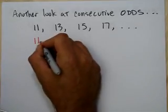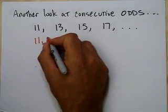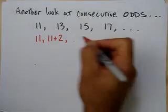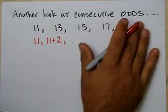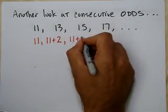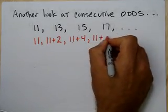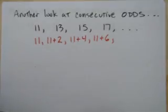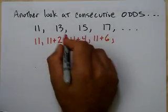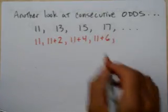Consecutive odd integers, 11, 13, 15, 17. Just like I did with those consecutive integers, I can rewrite it like this. 11, and 13 I can write as 11 plus 2. 15 I can write as 11 plus 4, and 17 I can write as 11 plus 6. Let's double check. 11 and 2 is 13, 11 and 4 is 15, 11 and 6 is 17.